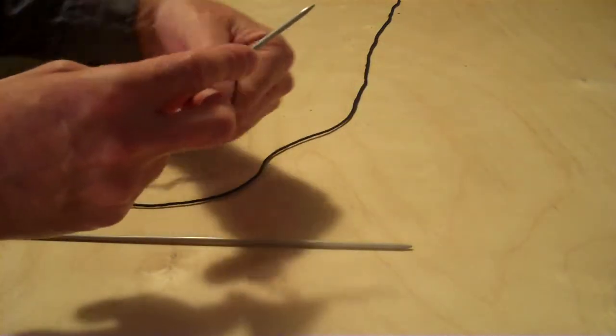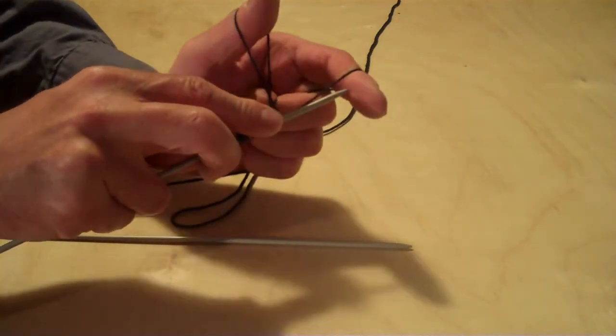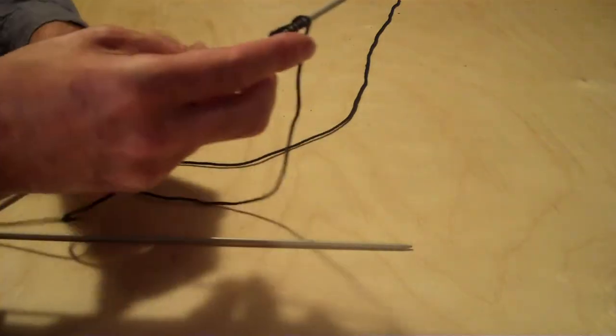One more time. Grab them. Loop under there. Pull it. Under that one. Pull it. Flick your loop over. I've done about ten stitches there.